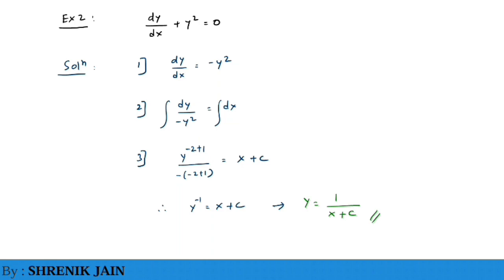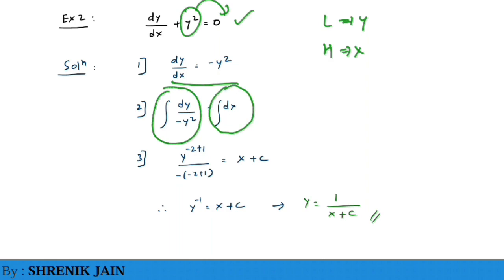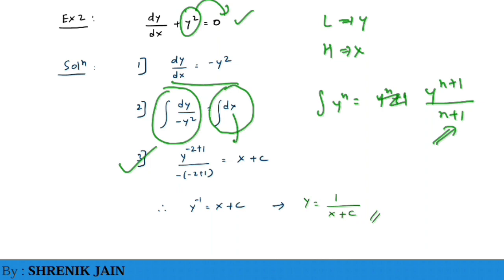First step: separate the variables. You cannot directly separate them here, but take y² to the right-hand side to get dy/dx = −y². Now the left-hand side is all y terms and the right-hand side is all x terms. Integrate both sides: ∫ dy / (−y²) = ∫ dx. Using the formula ∫ y^n dy = y^(n+1)/(n+1), and since integral of dx is x, add plus c. Rearranging: y^(−1) = x + c, so y = 1/(x + c).